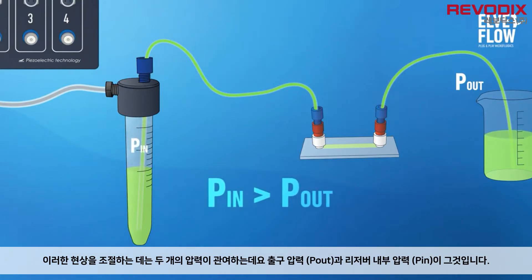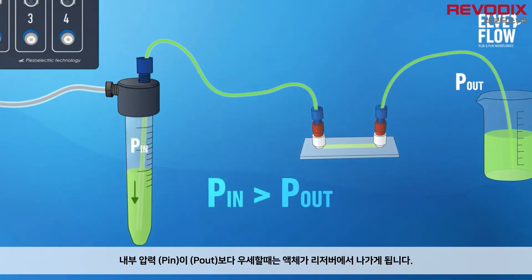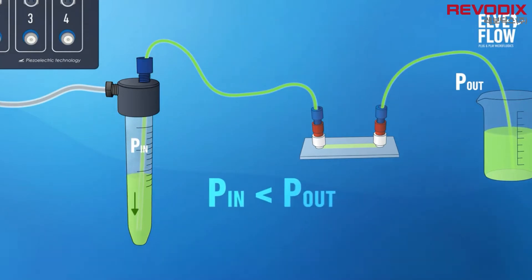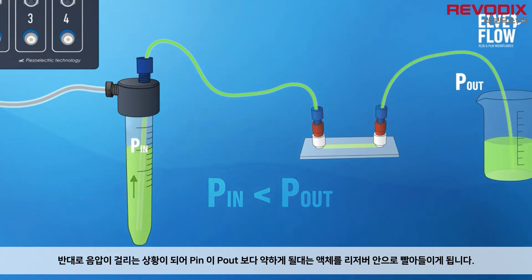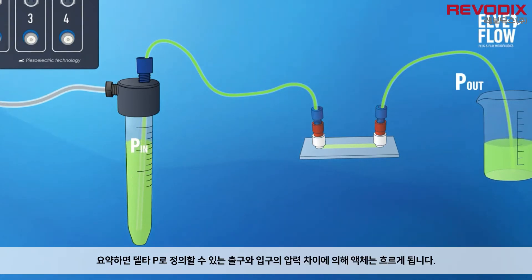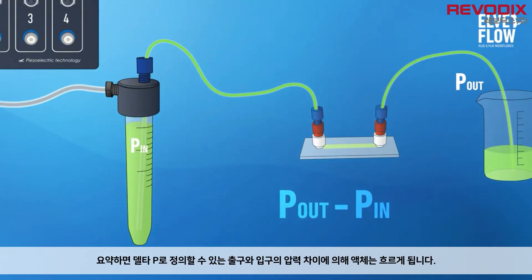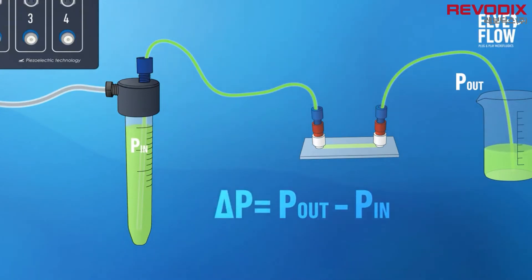When P-in is superior to P-out, the liquid leaves the reservoir. Oppositely, when P-in is inferior to P-out — when using vacuum, for instance — the liquid gets sucked back in. To sum it up, the liquid flows according to the difference of pressure between the inlet and outlet, which is called delta P.